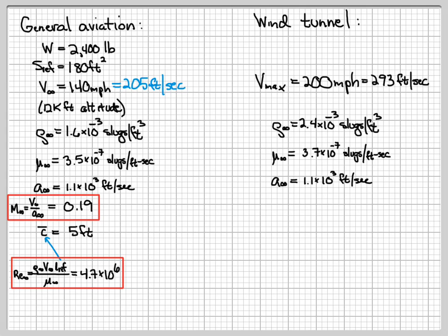Okay, now we can then calculate the maximum Mach number, and that's nothing more than the maximum velocity that the tunnel can achieve, this 200 miles per hour or 293 feet per second divided by the speed of sound, which is 1.1 times 10 to the 3 feet per second. So if you do that, you'll find out that the Mach number, the maximum Mach number the wind tunnel can achieve is 0.27, which is larger than the Mach number at cruise.